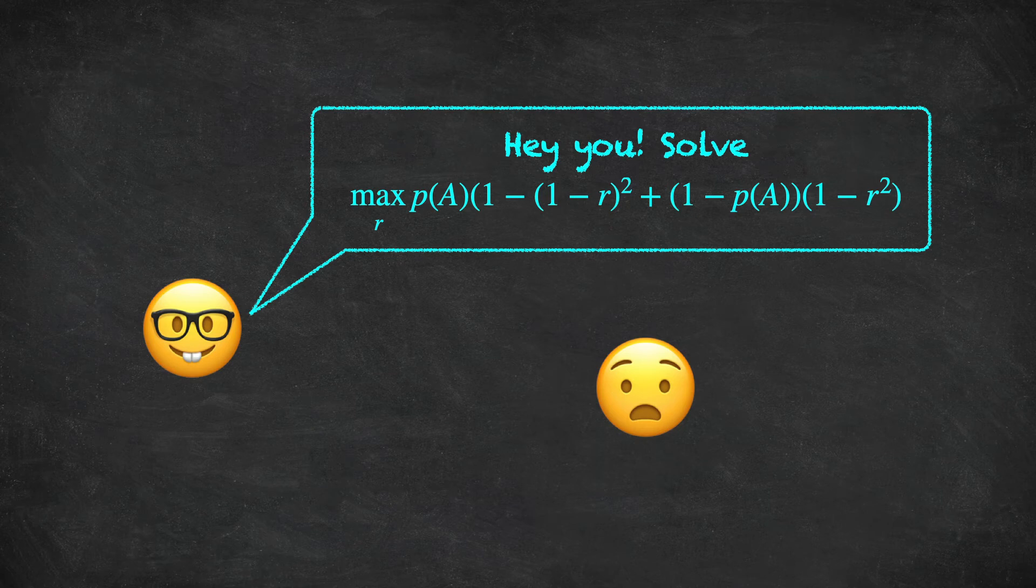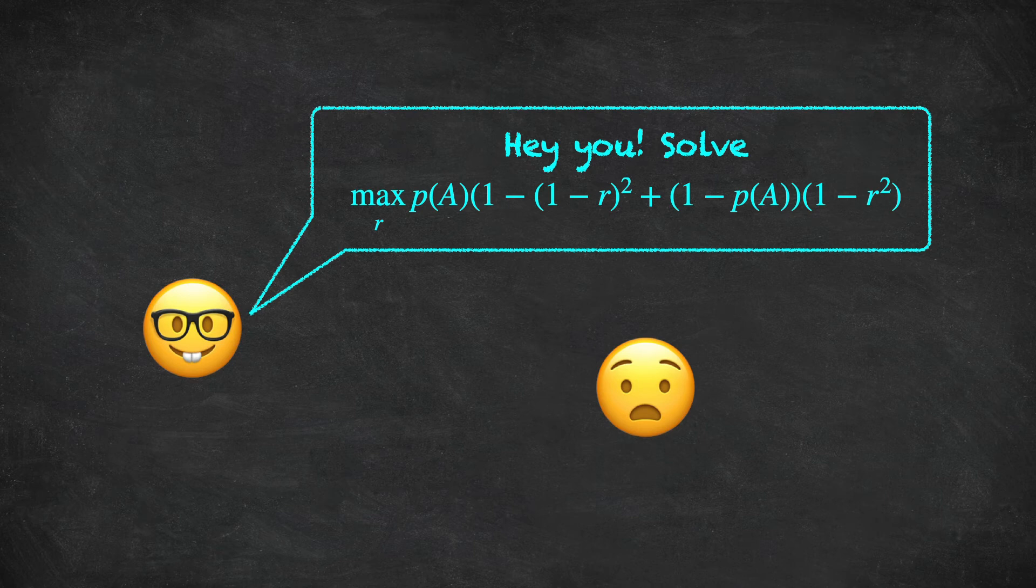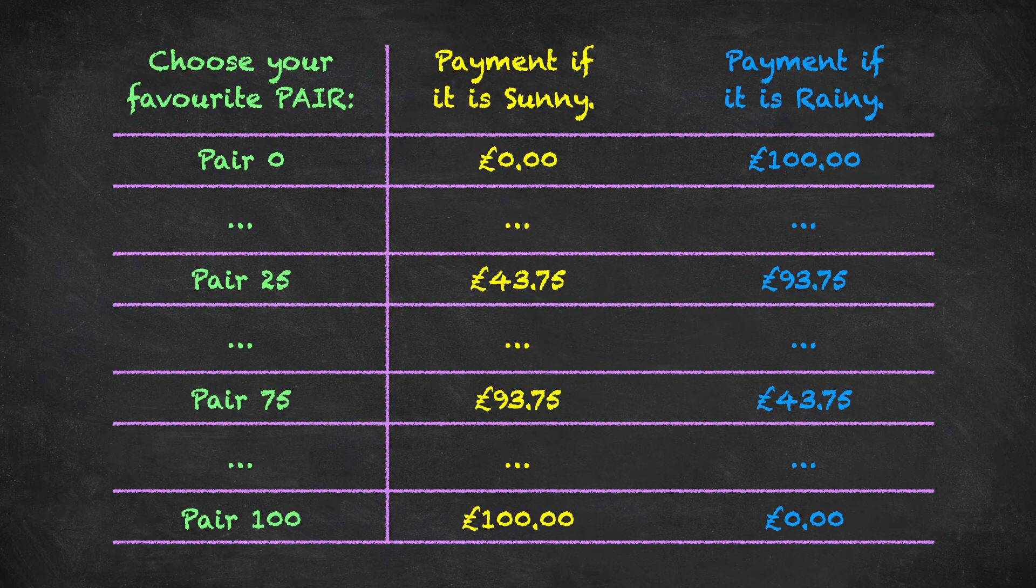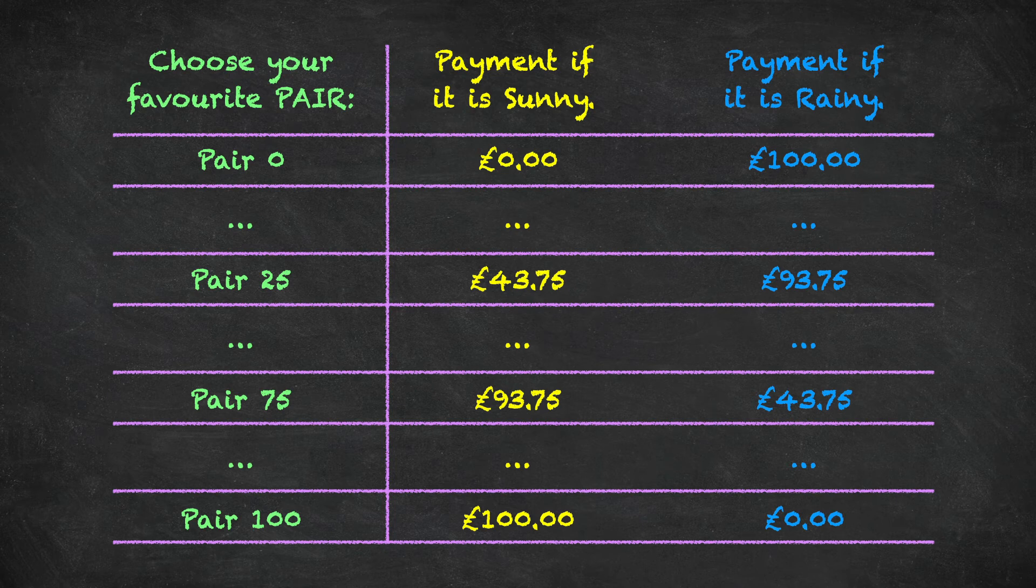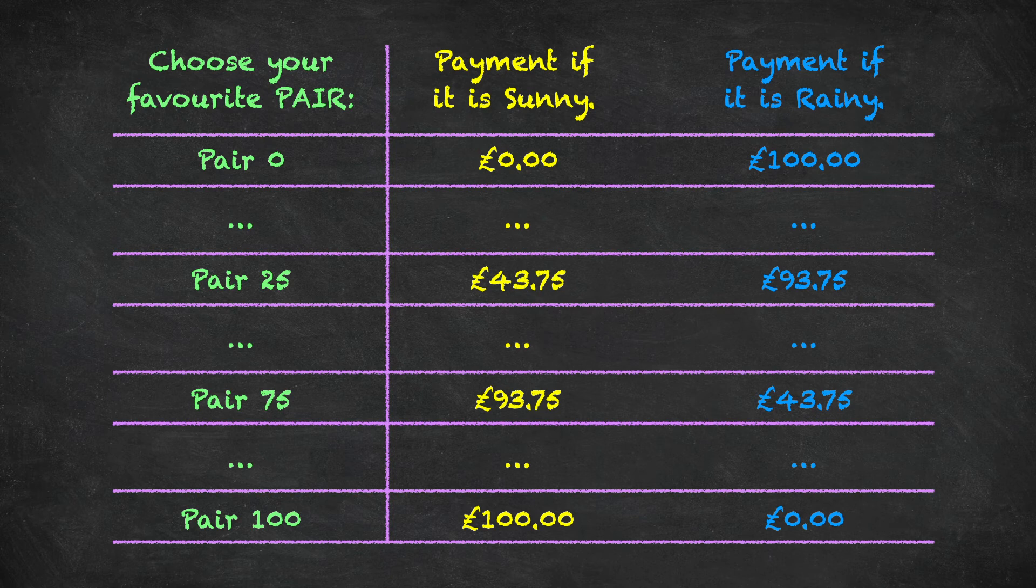Now, one thing to notice about proper scoring rules is that presenting experimental subjects, so presenting human beings with complicated calculus problems to solve, is probably not going to work. So how is this proper scoring rule idea actually used in experiments? Well, have a look at the following table. This is saying, choose your favorite pair, pair 0, 1, 2, 3, all the way up to 100. I've just included a few, but you could have as many of these pairs as you like. And then it says, a payment if it's sunny, 0 pound for pair 0, and a payment if it's rainy, is 100 pound for pair 0. And then looking at pair 100, that puts all of the 100 pound on the sunny event, and 0 pound on the rainy event.